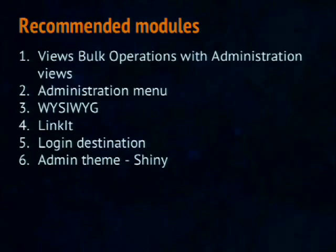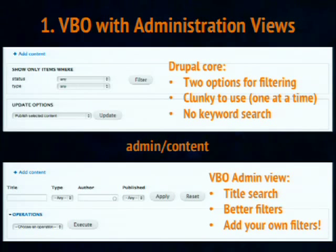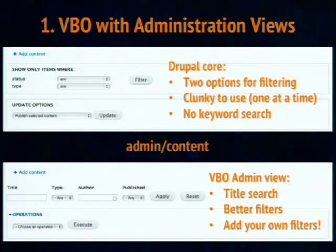Views Bulk Operations with Administration Views. The core admin content screen has two filter options — status and type — and it's really clunky. There's no keyword search. Simply by installing Views Bulk Operations and Administration Views, you get a much prettier content screen with a title search, better filters you can apply quickly, and the best part is you can add your own filters. As you add content types and taxonomy vocabularies, you can keep adding filters to enable people to find things quickly, and you can also add columns to the results screen.